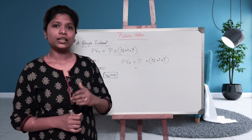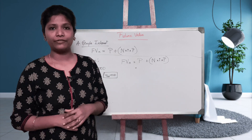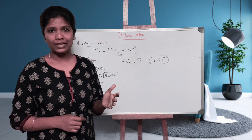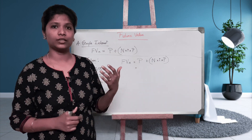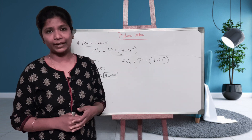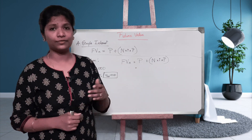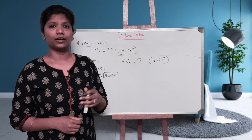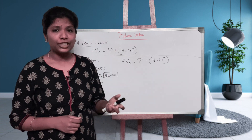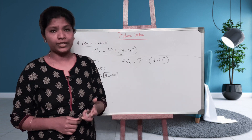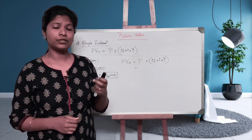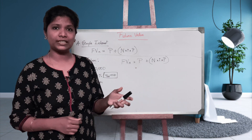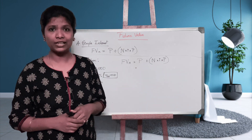Good evening, everybody. I have already shared with you all the formulas. We have discussed the time value of money chapter — what is future value, present value, annuity, ordinary annuity, annuity due, etc. All these topics we have discussed theoretically.